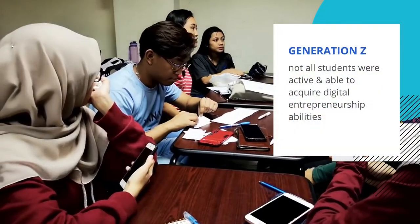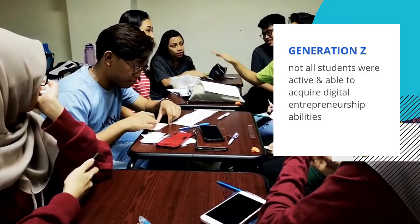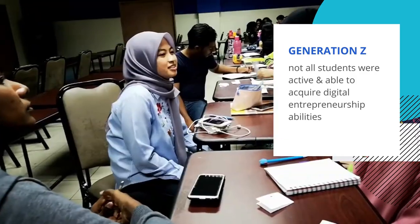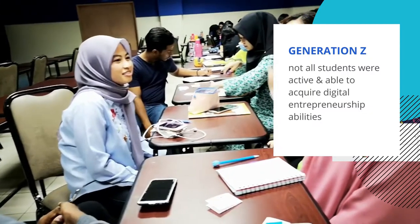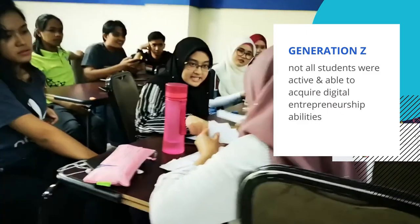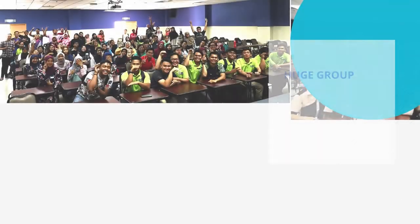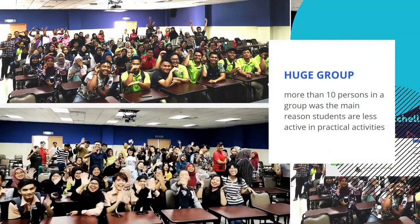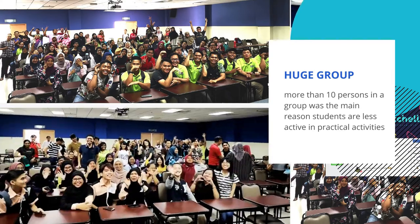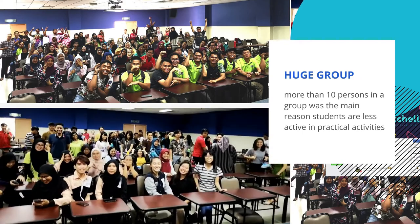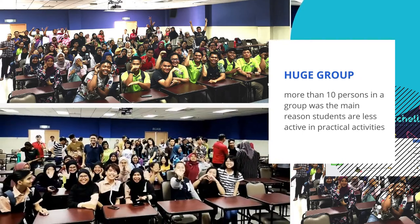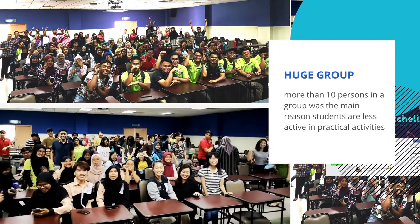The majority of UMS Malaysia Sabah students who take the APK course are second year science and arts students from Generation Z, who are accustomed to using technology like social media. However, after taking this 14-week course, not all of these students were active and able to acquire digital entrepreneurship abilities. The main reason students are less active in practical activities is the large number of students in the group.